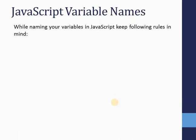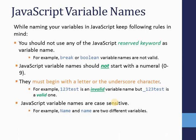When naming variables in JavaScript, there are certain rules to follow. You should not use any JavaScript reserved keywords as variable names — keywords reserved for the language itself — because they have specific meaning. For example, `break` or `boolean` are not allowed as variable names or function names.